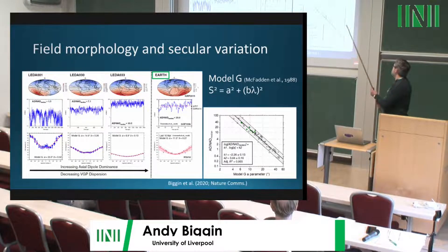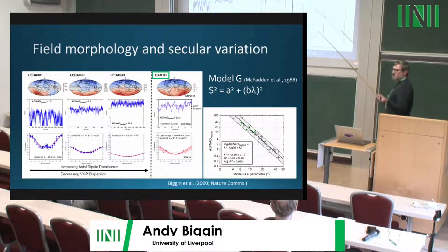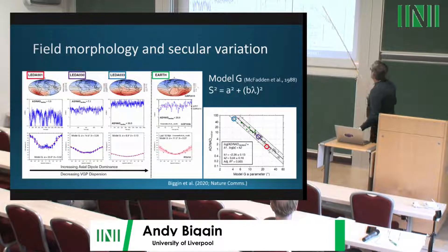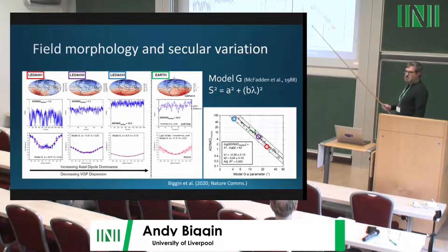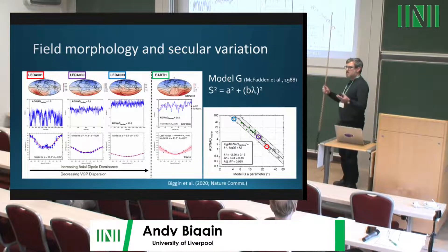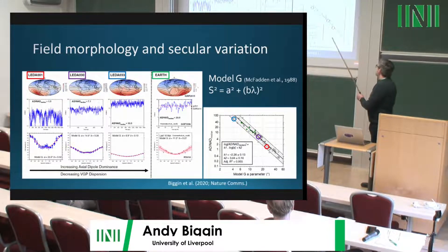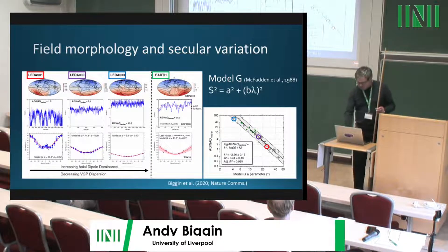From 61 dynamo simulations, we found a nice power law relating the median AD/NAD to the Model G parameter A — VGP dispersion at the equator. Various geomagnetic and paleomagnetic field models also sit on this power law. This is exciting because AD/NAD requires a global field model only available for the last hundred thousand years, whereas Model G parameter A can be obtained from compilations going back billions of years — giving us a way to estimate dipolarity from PSV data.